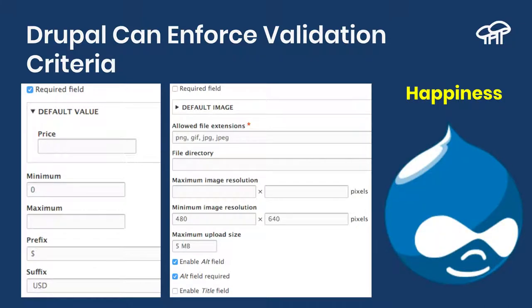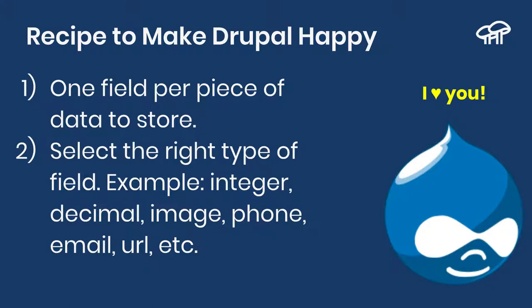When you start doing this, Drupal gets happier and happier. If you want to make Drupal love you, you have to follow a very simple recipe: for every piece of information that you want to store, you are going to create a new field. Going back to the car example, the make is going to be a field, the year is going to be a field, the color, the model, type of fuel, number of windows, number of doors, and so on. For every piece of information, you will have one Drupal field. In addition, you need to select the proper field type, because the proper field type is going to give you the proper validation criteria.